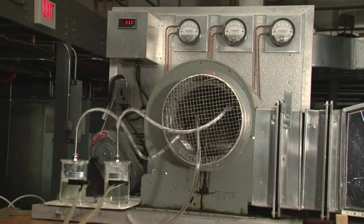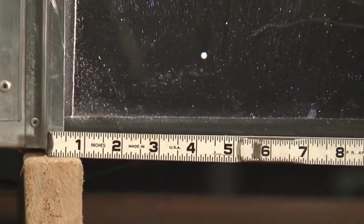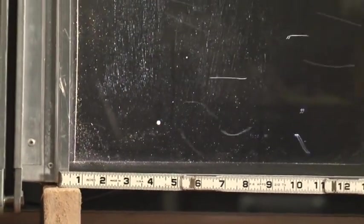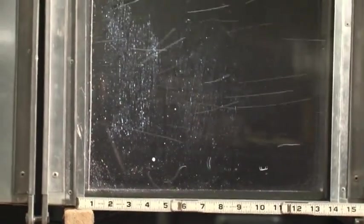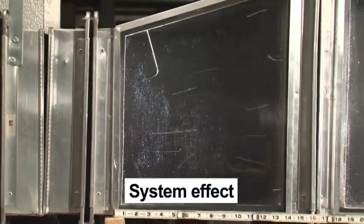Now let's begin our trip down the bubble machine's duct system. This first turbulence is near the discharge of the fan where the bubbles are moving erratically. This illustrates a phenomenon called system effect near the fan.